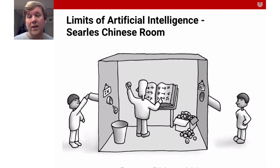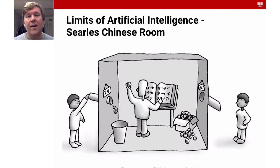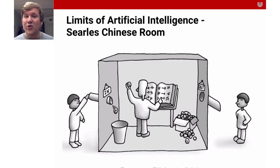Searle argues that the thought experiment underscores that computers merely use syntactic rules to manipulate symbolic strings, but they don't have any understanding of the semantics. There's a huge difference between actually understanding and faking to understand. Machine learning systems might look powerful, but they are just very good at imitating certain things. For many applications that's fine, but for others it's really not okay. My ambition is to teach you to make that distinction — to find where it's okay to apply machine learning and where it's really not appropriate.